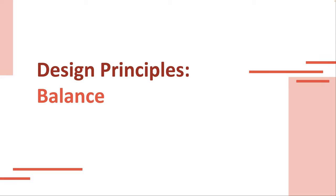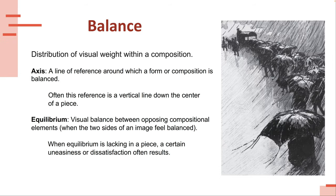We're going to talk about balance. We started to talk about some of the principles in balance already throughout the semester, and you'll start to see how a lot of the stuff we've covered relates and builds on each other and is in use in balance. Basically, balance is a distribution of visual weight within a composition — whether it's symmetrical, asymmetrical, radial, etc. We'll get into the specifics in a little bit.